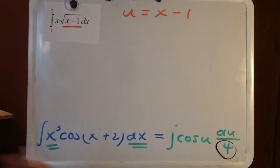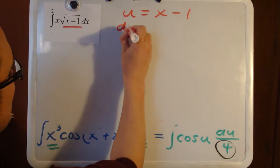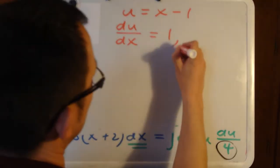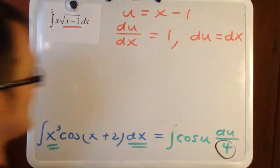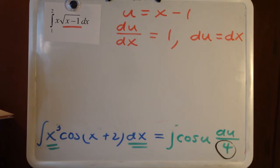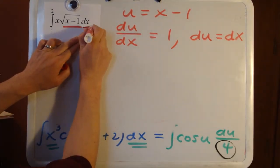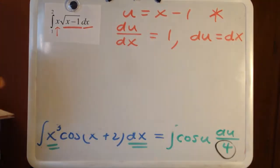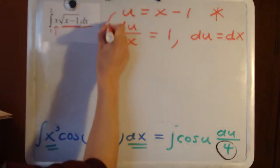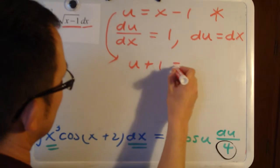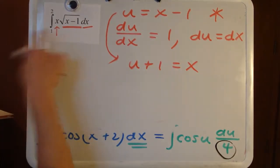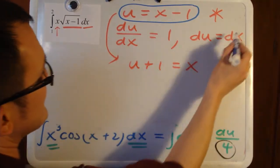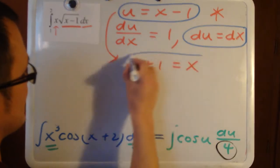I would look at x minus 1 here and let u equal x minus 1. There's no guarantee this will work, but it's worth trying. The derivative du/dx equals 1, so du and dx are interchangeable. The other thing about this problem is we also need to solve for x itself. From the original assignment, adding 1 to both sides gives x equals u plus 1. So: x minus 1 is replaced by u, du and dx are identical, and x equals u plus 1.